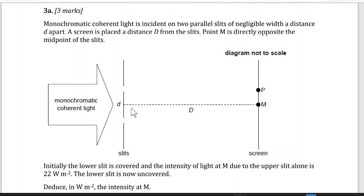Initially, the lower slit is covered. This one is covered initially. And the intensity of light at M is due to the upper slit only. So the intensity was 22 watt per meter squared. Deduce in watt per meter squared the intensity at M when the lower slit is uncovered.